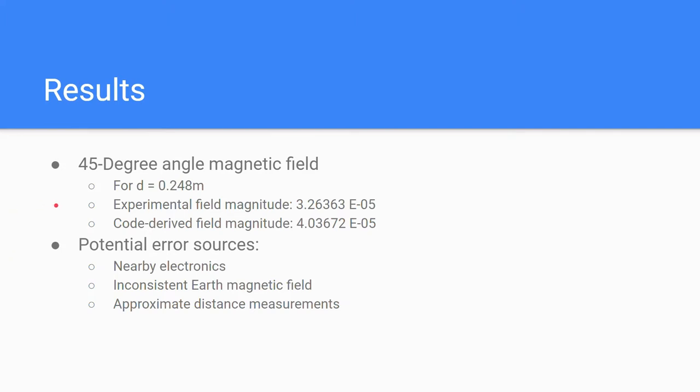As you can see, the measured value in the experiment for a 45 degree angle magnetic field and the code derived value did differ. And this may be due to various error sources in the experiment, which could include there being nearby electronics, an inconsistent Earth magnetic field due to the phone being tilted, and approximate distance measurement due to a ruler being relatively imprecise.